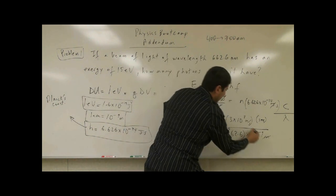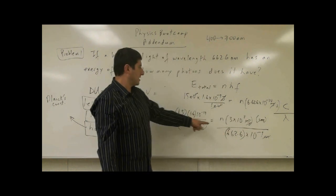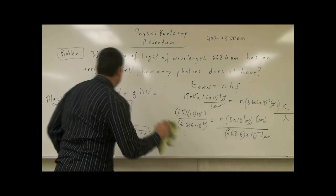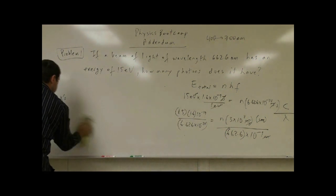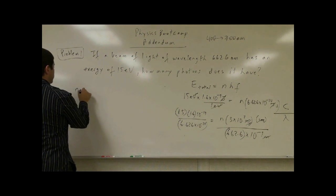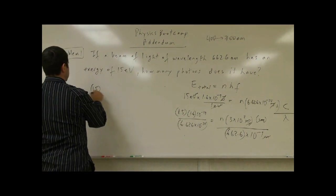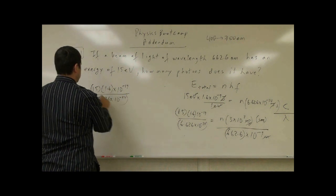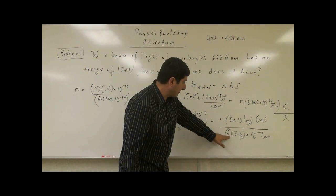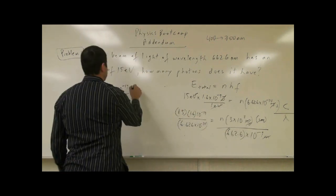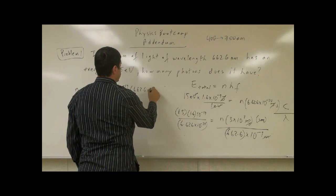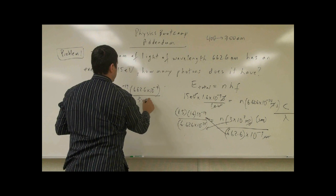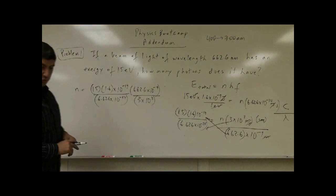Now look what happens as far as units. Meter, meter cancel, seconds, seconds cancel. So, meters cancel, seconds cancel, and therefore N is unitless. N is the number of photons that we have in that beam of light. So, the final solution is going to be what? So, N is going to be 15 times 1.6 times 10 to the minus 19 over 6.626 times 10 to the minus 34. And then the wavelength of the beam of light, 662.6, which goes up there, 662.6 times 10 to the minus 9. This one cross multiplies over there. And then the speed of light has to go down here, 3 times 10 to the 8. So, what's going to happen here? Well, let's multiply this all out.